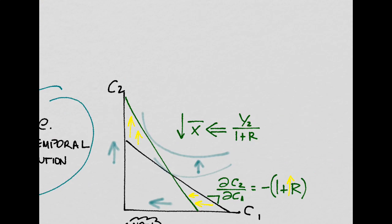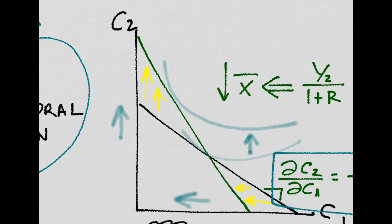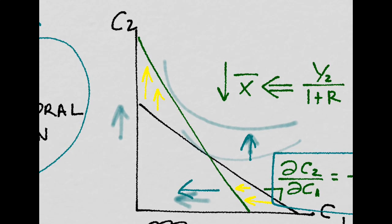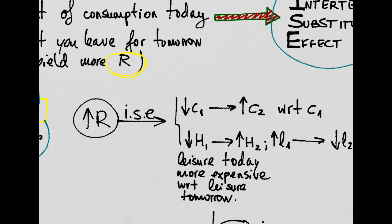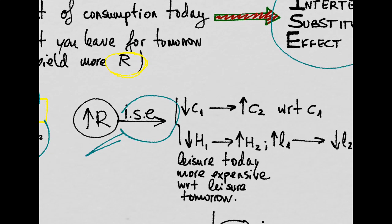There is an increase in the interest rate, so your budget line will be steeper — the slope is higher. We will go further up into a new indifference curve with lower present consumption and higher future consumption. So after an increase in R, we see that there is an inter-temporal substitution effect: present consumption goes down and future consumption goes up.